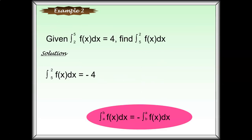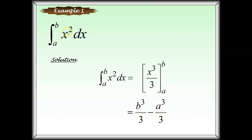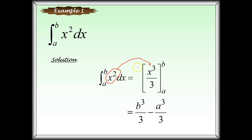Let's see the first example: integrate x² dx from a to b. What you have to do first is integrate it as usual. When you integrate x², you get x³ over 3 — remember, for integration you add 1 to the power (2+1=3) and divide by the new power. Then write a bracket with the limits a to b.